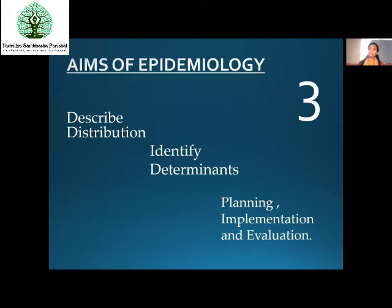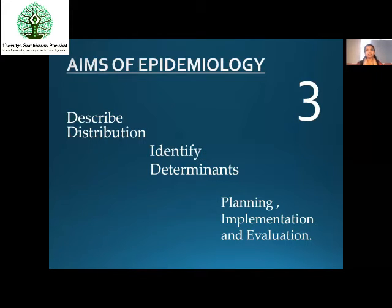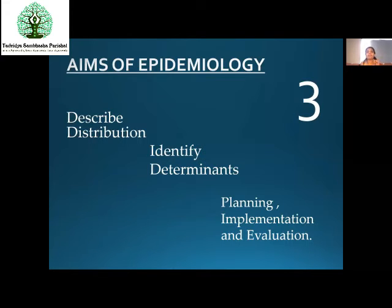This cycle continues until you find a perfect, ideal strategy that works — you keep upgrading the plan. Once the planning is implemented, you evaluate whether it is working. If something can be improved, you go back to planning, collect and change some things, implement again, and evaluate again. The cycle continues until you find the ideal strategy.